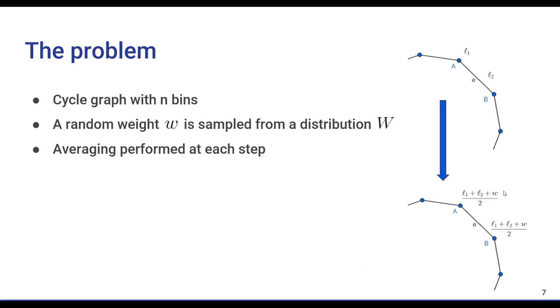The problem we will tackle is a mix between these two approaches, where the graph is a cycle, and at each step, a weight is sampled from a weight distribution, and one edge is chosen at random.